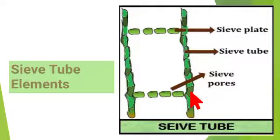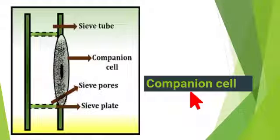Sieve plates are present at the end of the sieve tubes. It is a perforated plate which consists of many sieve pores.